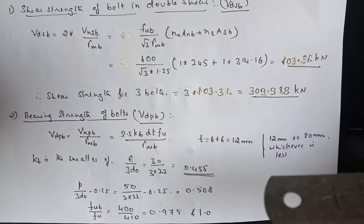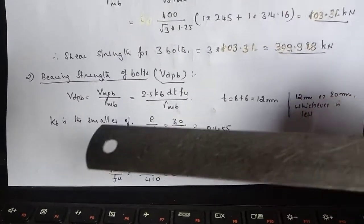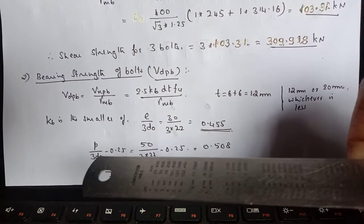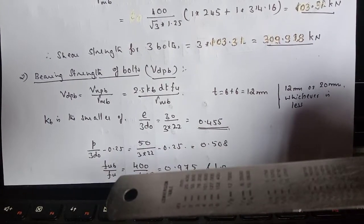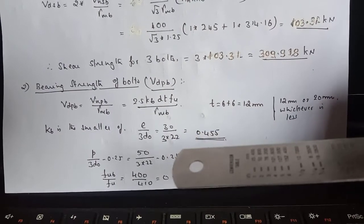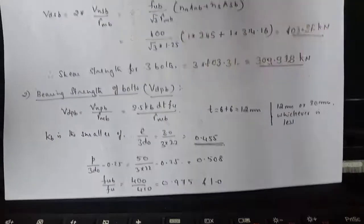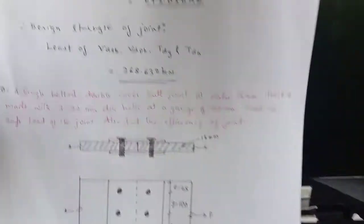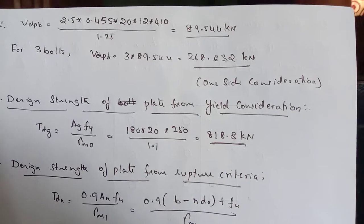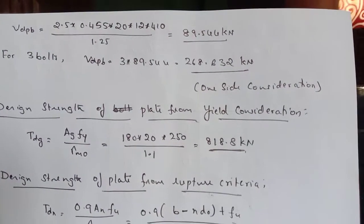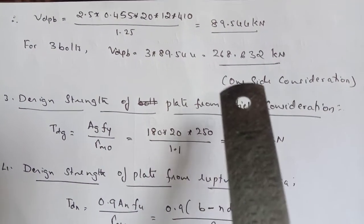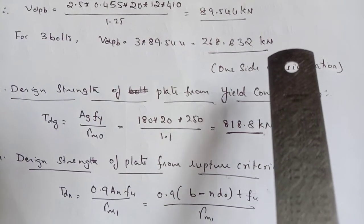So it works out to be two cover plates we have, so it works out to be 12 mm or 20 mm, whichever is less. Then KB is the smallest of E divided by 3D0, P divided by 3D0 minus 0.25 FUB by FU or 1. So out of this, we get E divided by 3D0 equal to 0.455 as the least value. And we are going to consider the same value as the KB value. So therefore, upon substitution, we get VDPB equal to 89.544 kilonewton. Then for three bolts by considering only one side, we get 268.632 kilonewton.